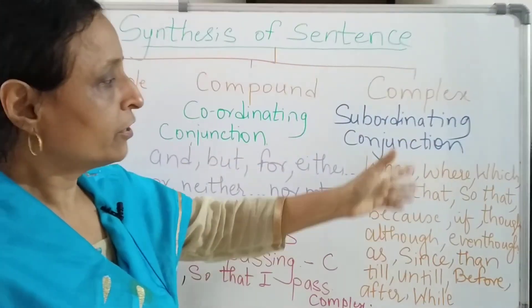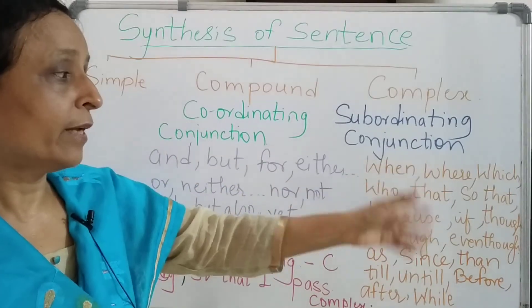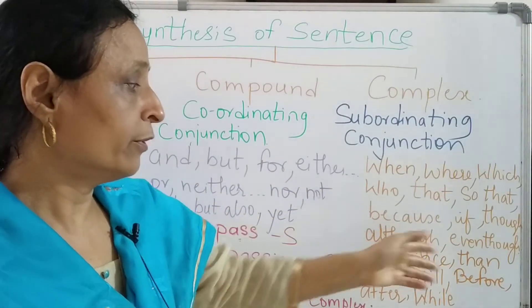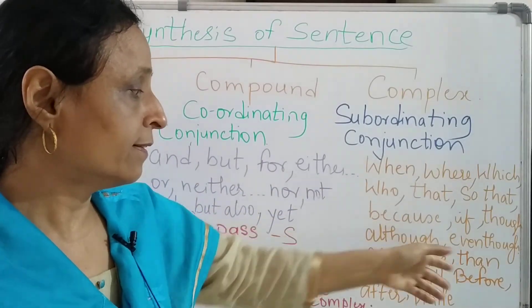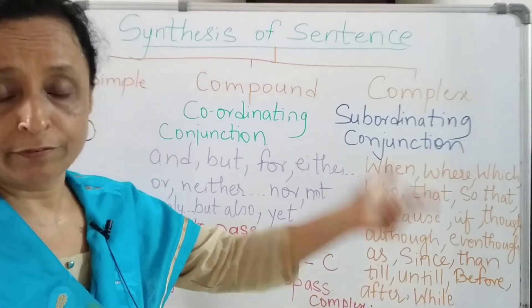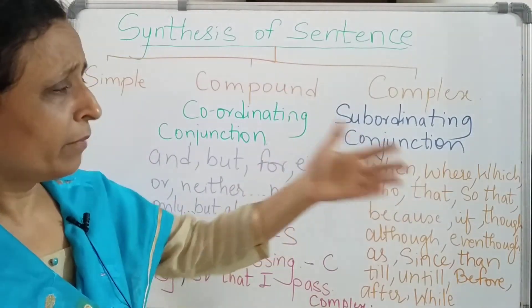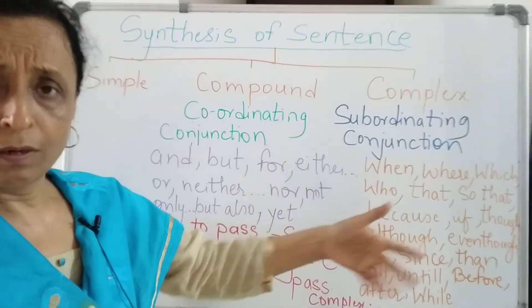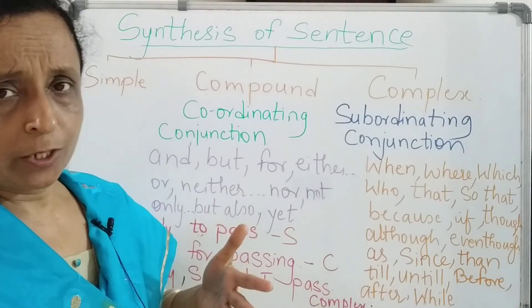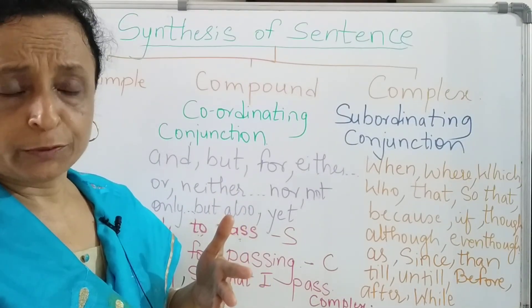Subordinating conjunctions: which, who, that, so that, because, if, though, although, even though, as, and then, till, until, before, after, what — and many more. All these are subordinating conjunctions. You should know what the subordinating conjunctions are to make a complex sentence. With this knowledge, you will be able to synthesize any type of sentence.